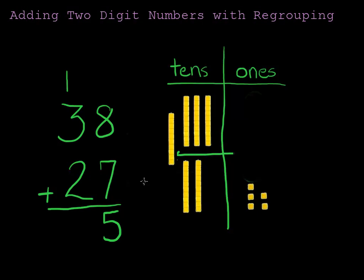Now that we've regrouped, we can add our numbers, our tens, on the second column. So, we have one new 10 plus the three tens from 30 plus the two tens from 20. That's six tens in all and our final answer is 65.